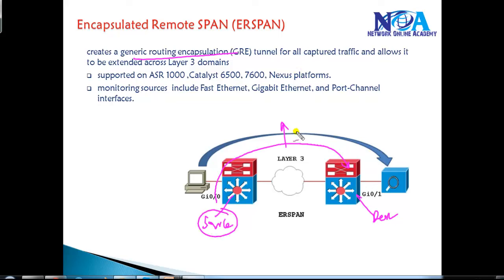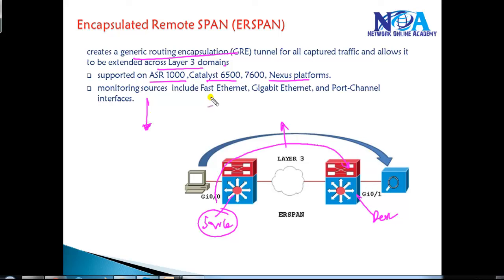ERSPAN allows traffic to cross Layer 3 domains. This feature is supported on most Cisco ASR platforms, Catalyst 6500 series switches, 7600 platforms, and Nexus platforms. The platform used in our CCIE Routing and Switching lab, this feature is not going to be tested. We can monitor Ethernet interfaces, Fast Ethernet, or port-channel interfaces.